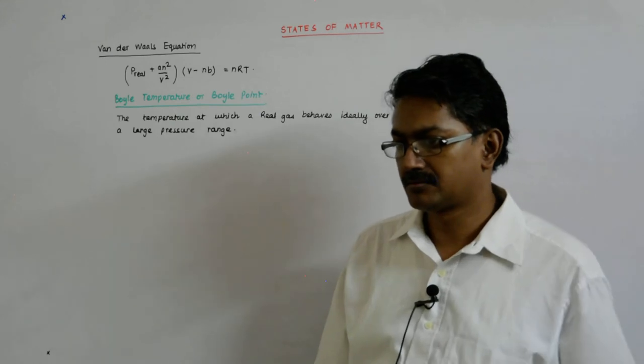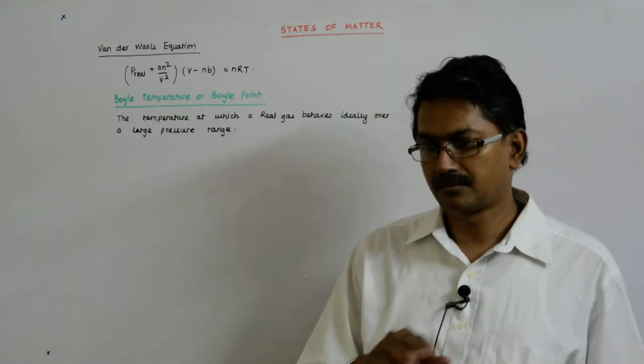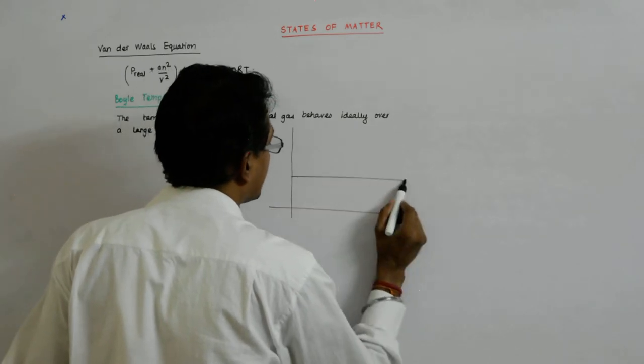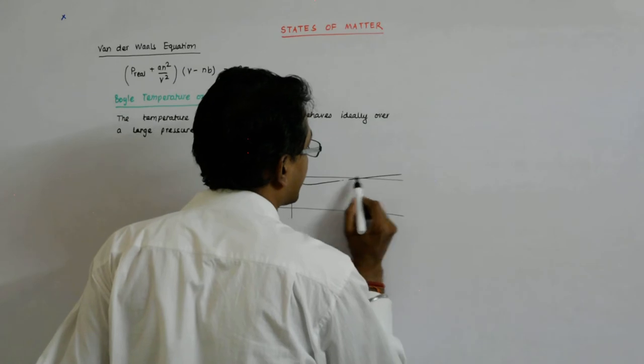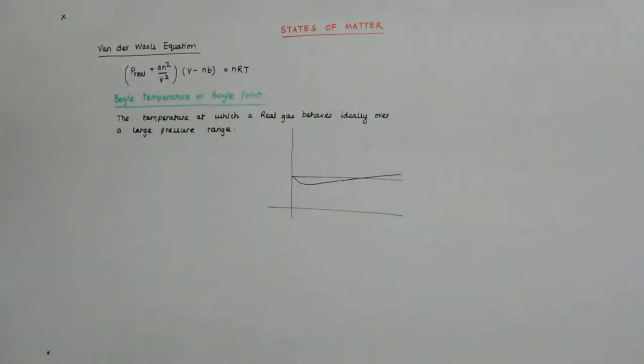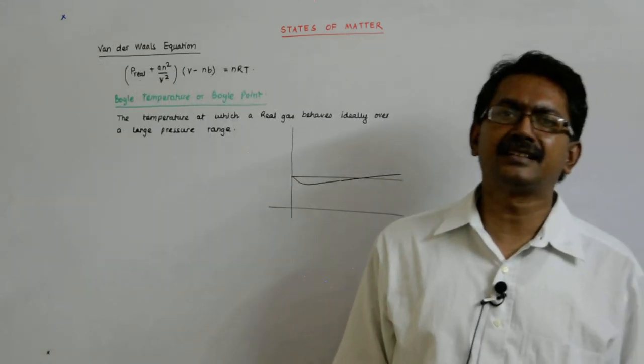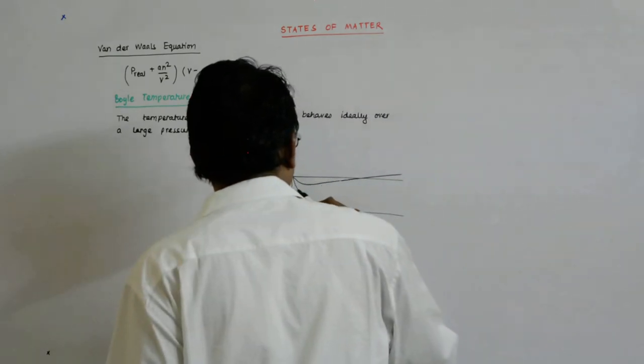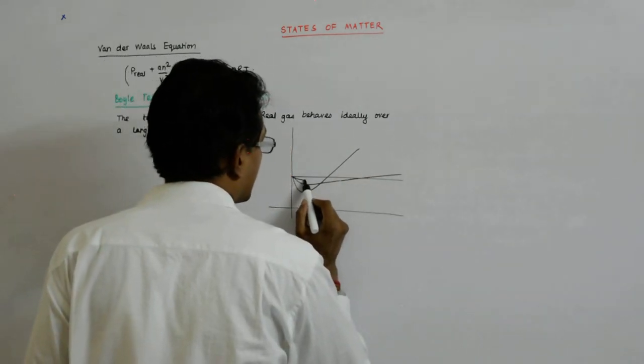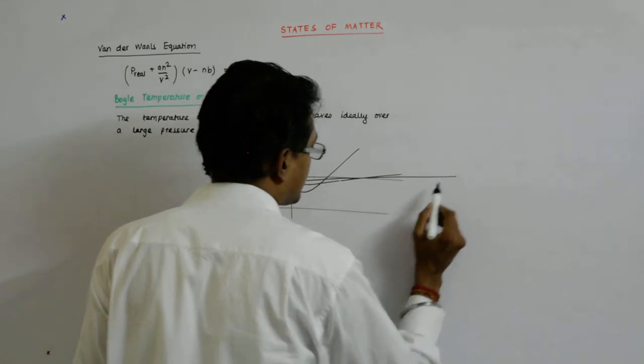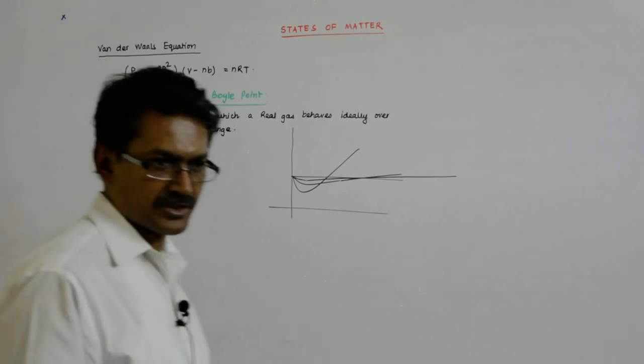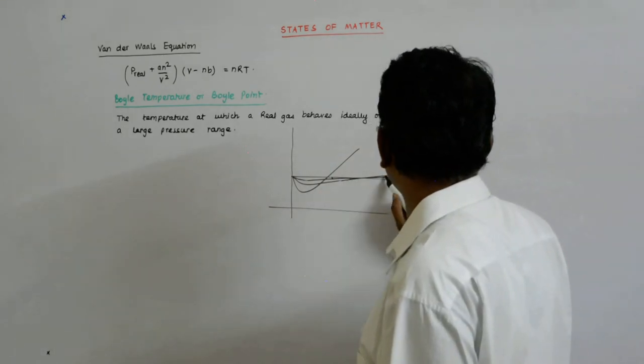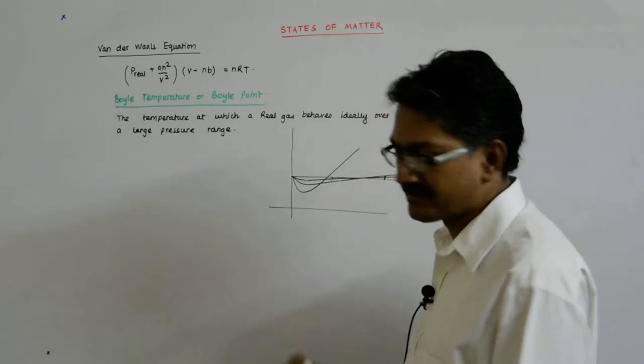So that it follows the graph, it follows this graph, the straight line kind of graph. If you start increasing, because what we had drawn earlier, at a low temperature, the deviation will be more. This is low temperature. This is a higher temperature. Maybe this is still higher temperature. Because we know as we increase the temperature, so what we are trying to do, at what temperature, for the largest pressure range, it behaves like an ideal gas.